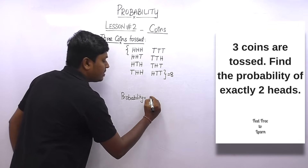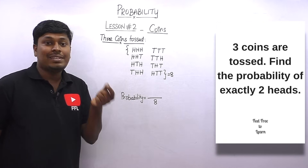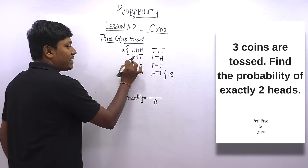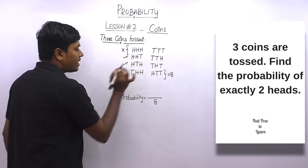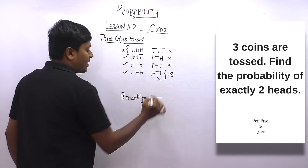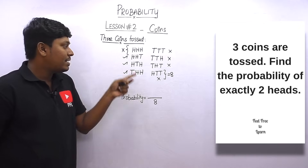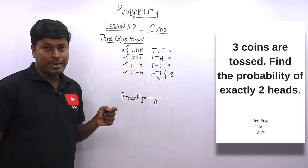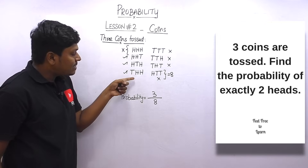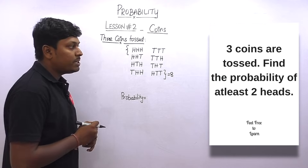Question 5: Three coins are tossed — find the probability of exactly two heads. Total possibility = 8. We look for outcomes with exactly two heads: HHT, HTH, and THH — that gives three favorable outcomes. So probability = 3/8.